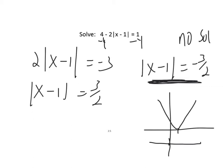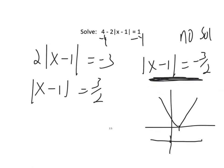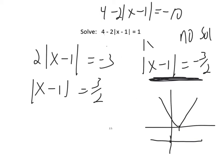Sometimes they'll write something like 4 - 2|x - 1| = -10. Some people stop and say there's no solution because it looks like the absolute value equals a negative number — but they haven't isolated it yet. If you isolate it, you get |x - 1| = 7, which is positive, so there will be a solution. You must isolate the absolute value first before drawing any conclusions.